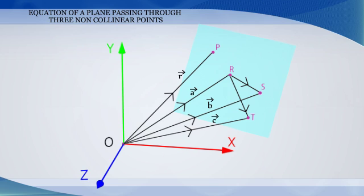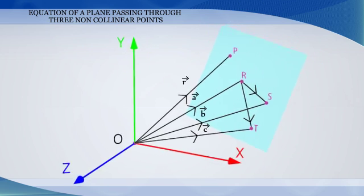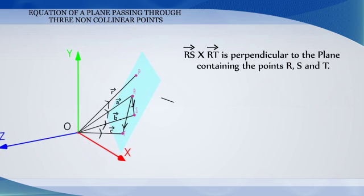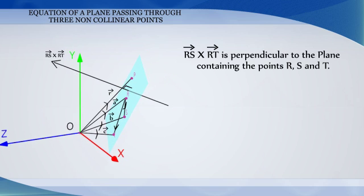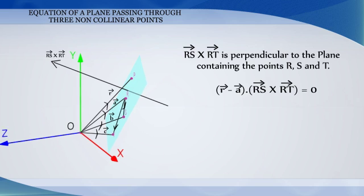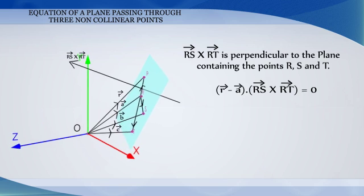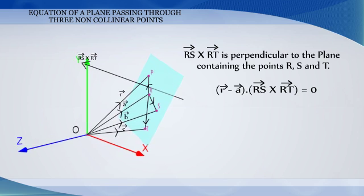By the definition of the cross product, RS cross RT is a vector perpendicular to the plane containing the points R, S and T. Therefore, the equation of the plane passing through R and perpendicular to the vector RS cross RT is: R vector minus A vector, dot (RS vector cross RT vector), is equal to zero.